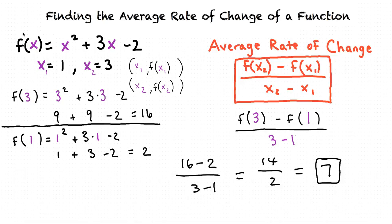Once we know the values of f of x1 and f of x2 we can plug those values into our rate of change formula. We subtract f of x1 from f of x2 in the numerator and then divide that by the difference of x2 and x1. And then we have our average rate of change.